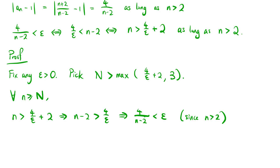For little n greater than or equal to N, n greater than 4 over epsilon plus 2 implies n minus 2 is greater than 4 over epsilon, which implies 4 over (n minus 2) is less than epsilon, where we have used the fact that n is greater than 2. This implies the absolute value of (n plus 2) over (n minus 2) minus 1 is less than epsilon, and this completes the proof.